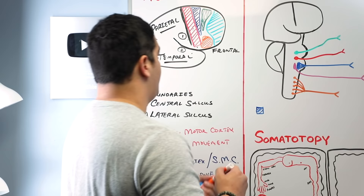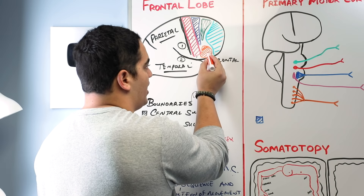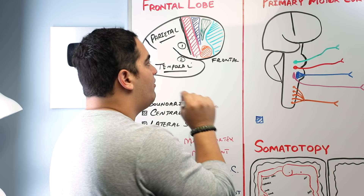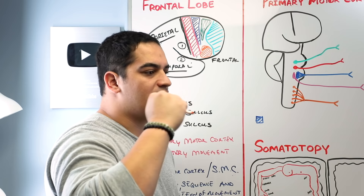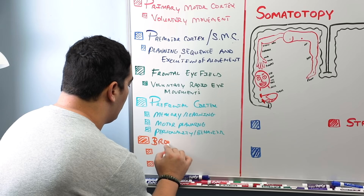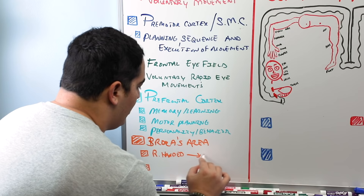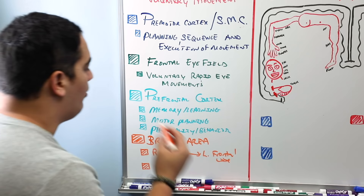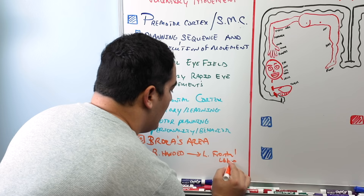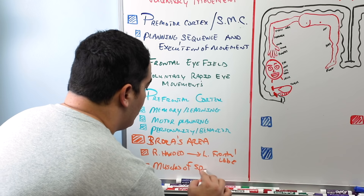The last area in the frontal lobe is this orange portion called Broca's area. Broca's area is found particularly in the dominant hemisphere. So if a person is right-handed, Broca's area will most likely be on the left side of the frontal lobe. Broca's area is involved with the muscles of speech — specifically the muscles that help us produce speech.